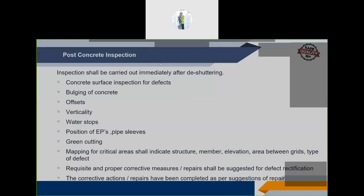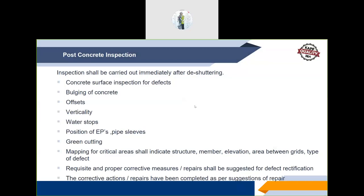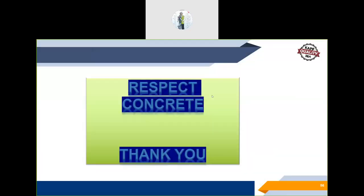Post-concrete inspection is done in the presence of the client. The concrete surface is inspected for bulging, offsets, verticality, water stopper position as specified in drawings, position of EPs not disturbed during concreting, and whether green cutting has exposed aggregates effectively. The post-concrete inspection format captures observations and repair suggestions, and is duly signed by the client.